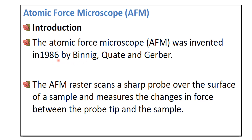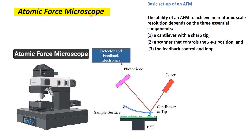Now we discuss atomic force microscopy (AFM), which was invented by Binnig in 1986. In AFM, atomic forces are measured as the probe scans the sample. It is a tabletop device and does not require any vacuum. The components include a PZT (piezoelectric) crystal platform on which the sample is placed, a cantilever with a tip, a laser light that falls on the tip, and a photodiode detector.